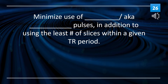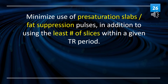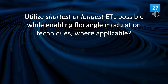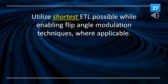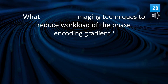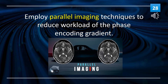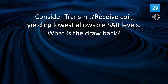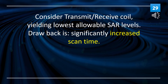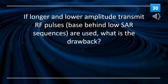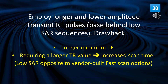Minimize the use of pre-saturation slabs (also known as fat suppression pulses) and use the least number of slices within a given TR period. Utilize the shortest ETL possible while enabling flip angle modulation techniques where applicable. Parallel imaging techniques reduce the workload of the phase encoding gradient. Consider transmit or receive coils yielding the lowest allowable SAR levels. Using longer, lower amplitude transmit RF pulses based on low SAR sequences results in a longer minimum TE and requires a longer TR value, leading to increased scan time.